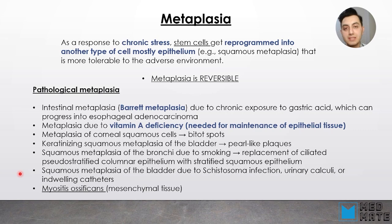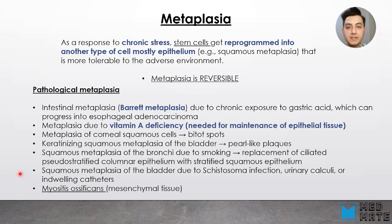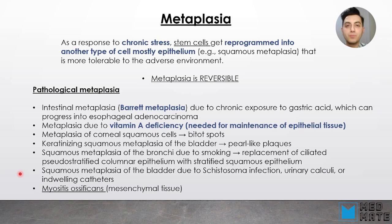Another cellular adaptation is metaplasia. Metaplasia happens due to chronic stress, and when this stress persists for a long term, stem cells of that tissue get reprogrammed into another type that is more tolerable toward the specific stress. It happens mostly to epithelial cells, and these new types of epithelium are more tolerable toward the adverse environmental effect. Importantly, metaplasia is reversible — when you eliminate the stress, metaplasia can be reversed.